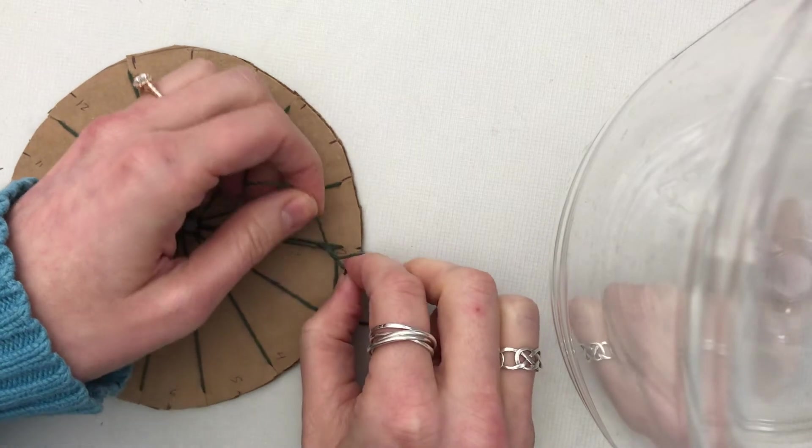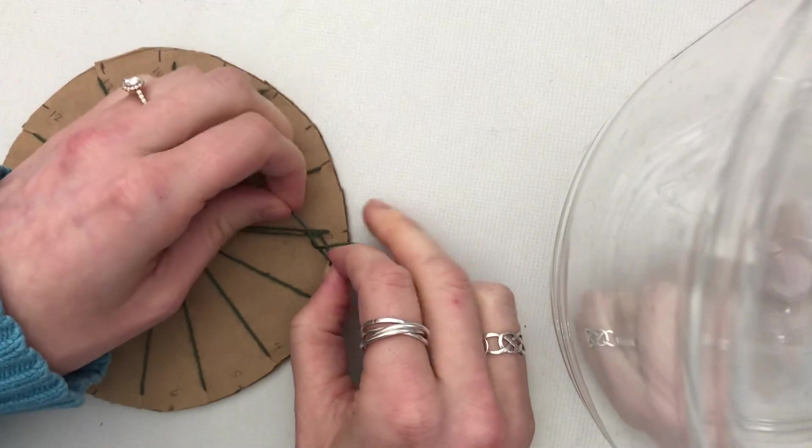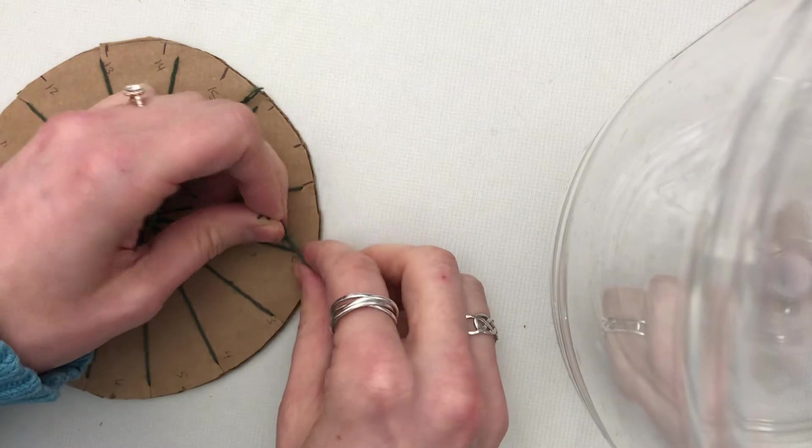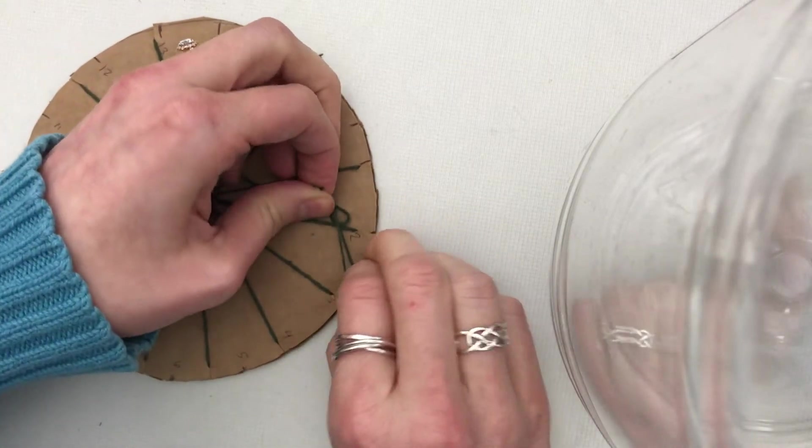Again, make this as tight as you can. Ask a friend, ask a parent, ask a sibling for help to make it nice and tight.